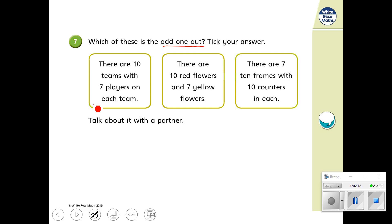So let's start with box number 1 here. There are 10 teams with 7 players on each team. Okay, 10 teams, 7 players. So I've got 10 teams, I have 7 players, so I have got 10 groups, 10 groups of 7.